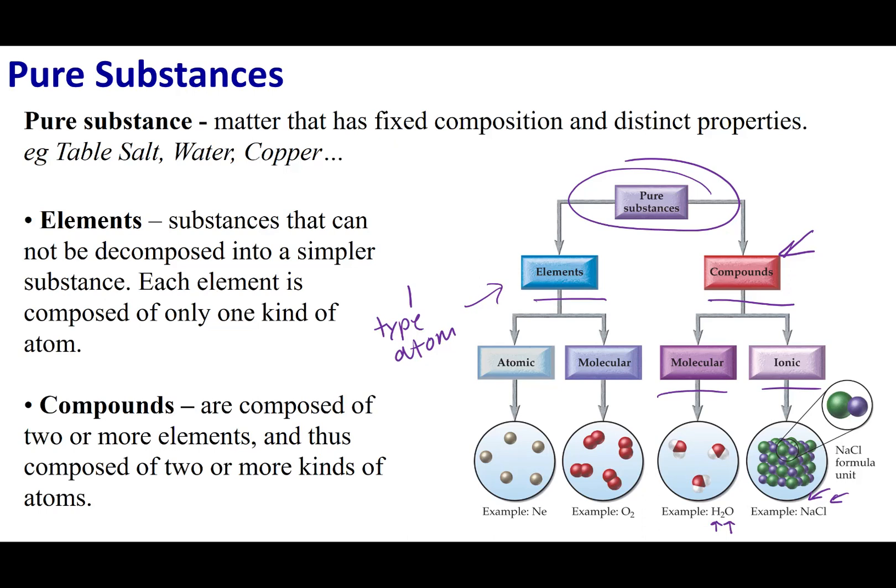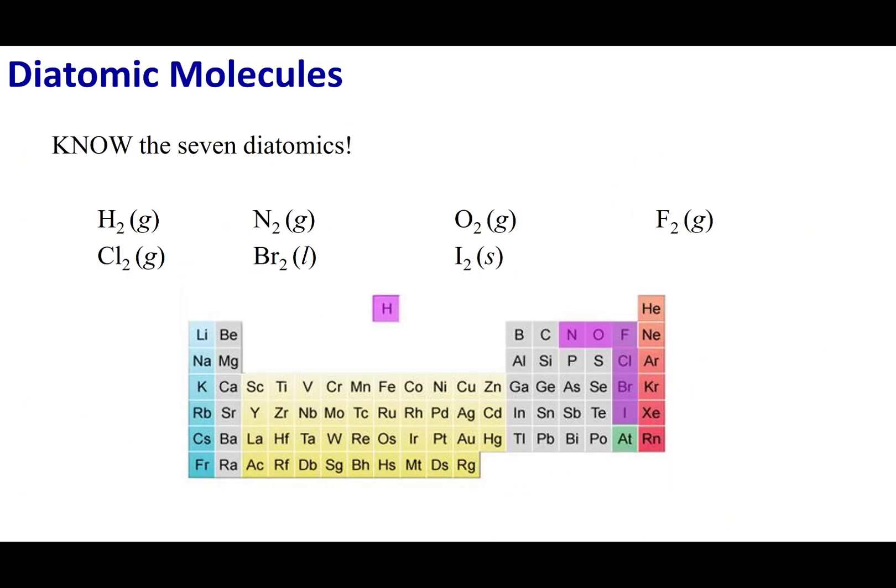On this last slide, I want you to do me a favor. I think it's a really good idea that you memorize the seven diatomic elements on the periodic table. These pop up a lot in chemistry. It's good to know that the elemental form of hydrogen, nitrogen, oxygen, fluorine, chlorine, bromine, and iodine are diatomic molecules, meaning they exist with two of these atoms stuck together. This is their standard state. You don't have to memorize the states if you don't want to.